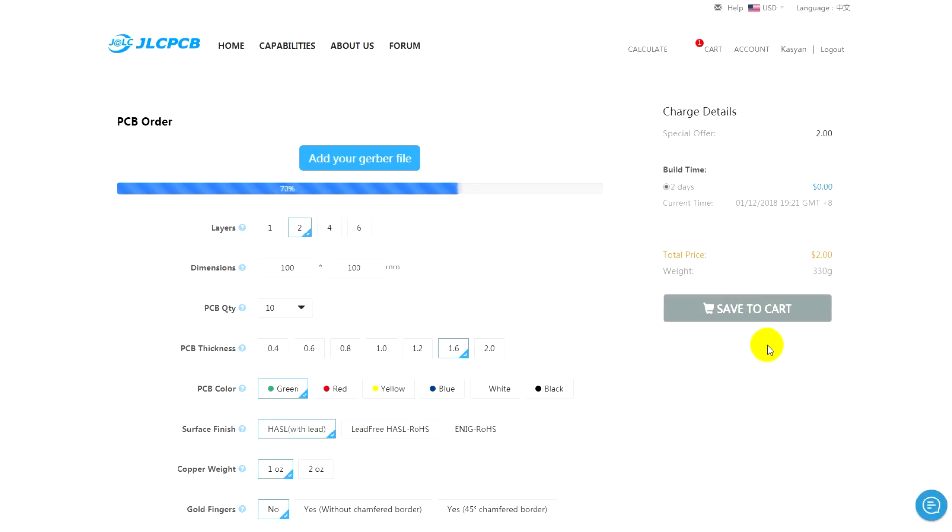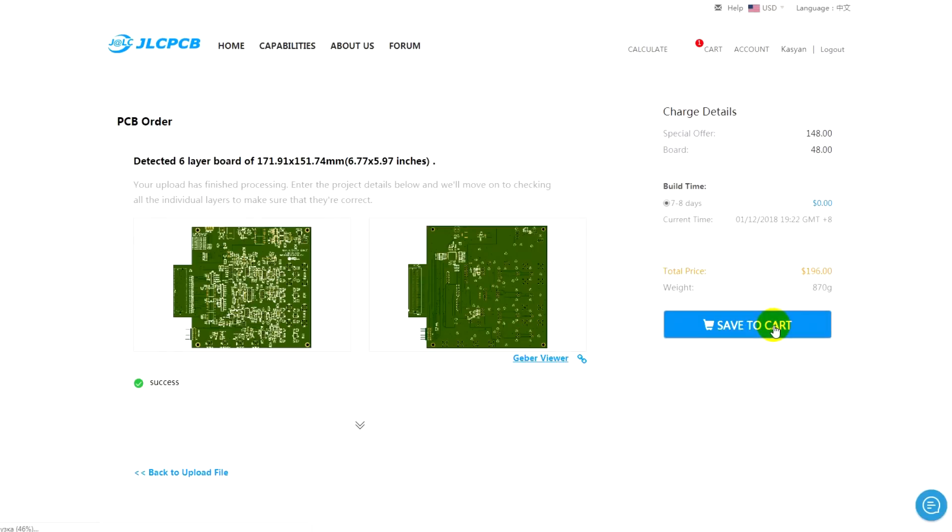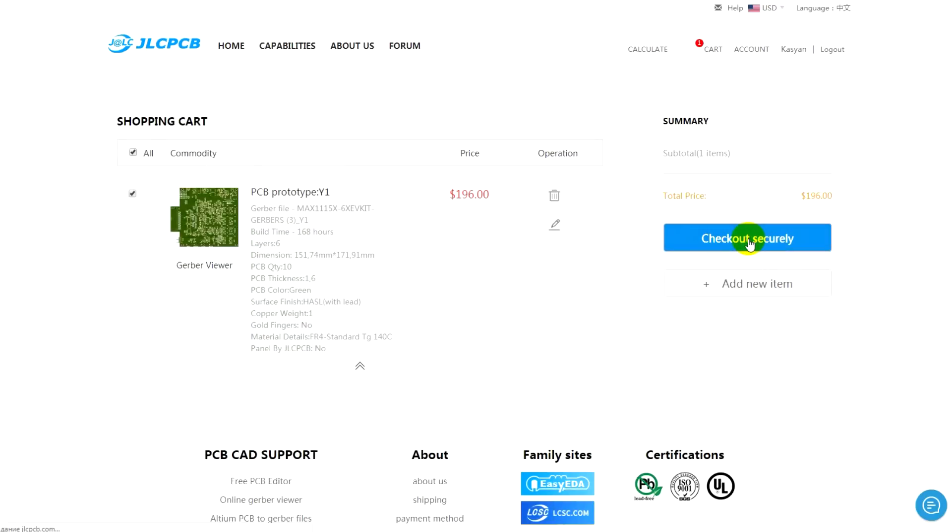It's easy. Download your Gerber file, select the options you need, pay for the order, and wait for the parcels.